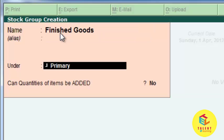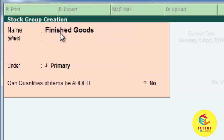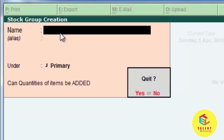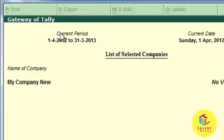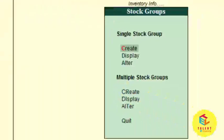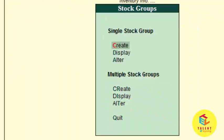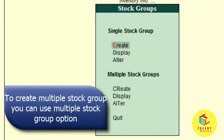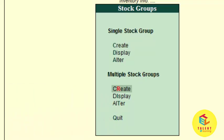Under primary category, press yes. Now press escape and quit out of this window. We can also create multiple stock groups — for example, if we want to create finished goods subcategories or any other items under the finished goods category, we can use the multiple stock groups option. Go to multiple stock groups and select create.